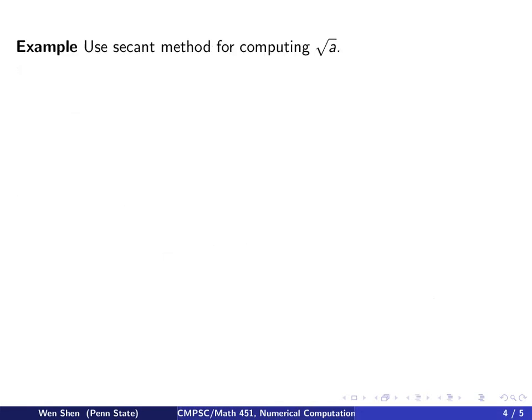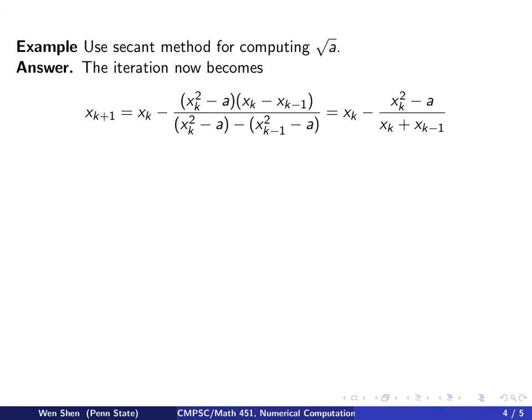So let's look at the same example as we did with Newton's method. Let's say we want to compute square root of a, and we try to solve the polynomial x square minus a equal to 0 by secant method. So if you set it up, then this becomes the secant iteration.